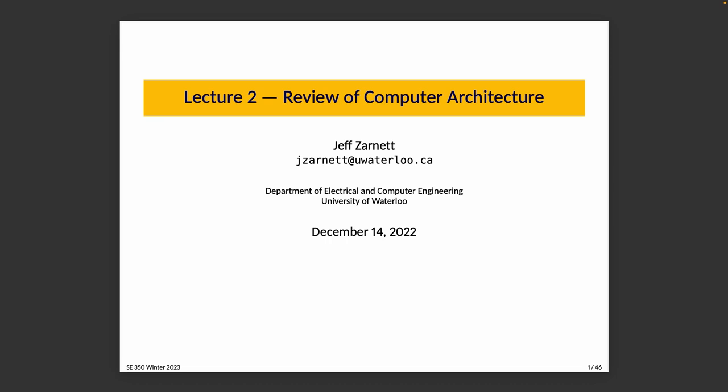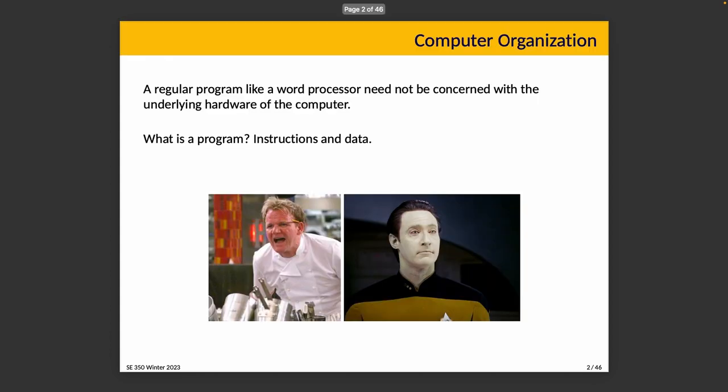Lecture 2: Review of Computer Architecture. Although a regular program like a word processor need not be concerned with the underlying hardware or computer, this is just an abstraction and the abstraction does not come for free. The operating system must be aware of the details and manage them for everyone.